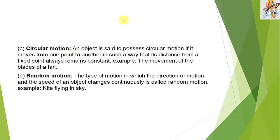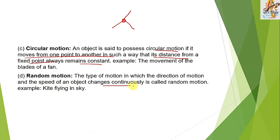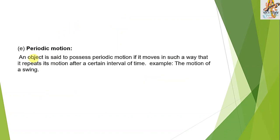Circular motion: an object possesses circular motion if it moves such that its distance from a fixed point always remains constant — example, the movement of the blades of a fan. Random motion: the direction and speed of the object change continuously — example, a kite flying in the sky. Periodic motion: an object repeats its motion after a certain interval of time — example, the motion of a swing.